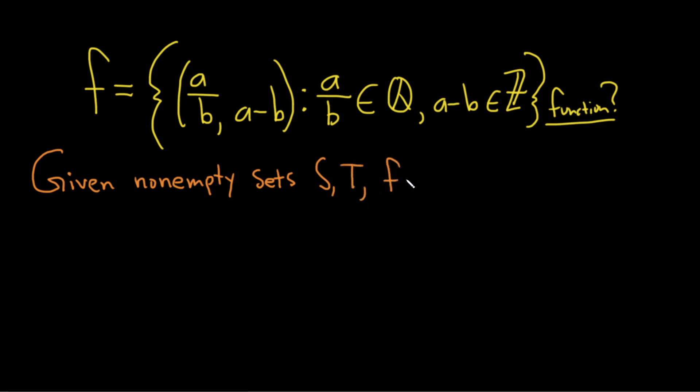We say that f, which is a subset of s cross t, is a function from s to t.